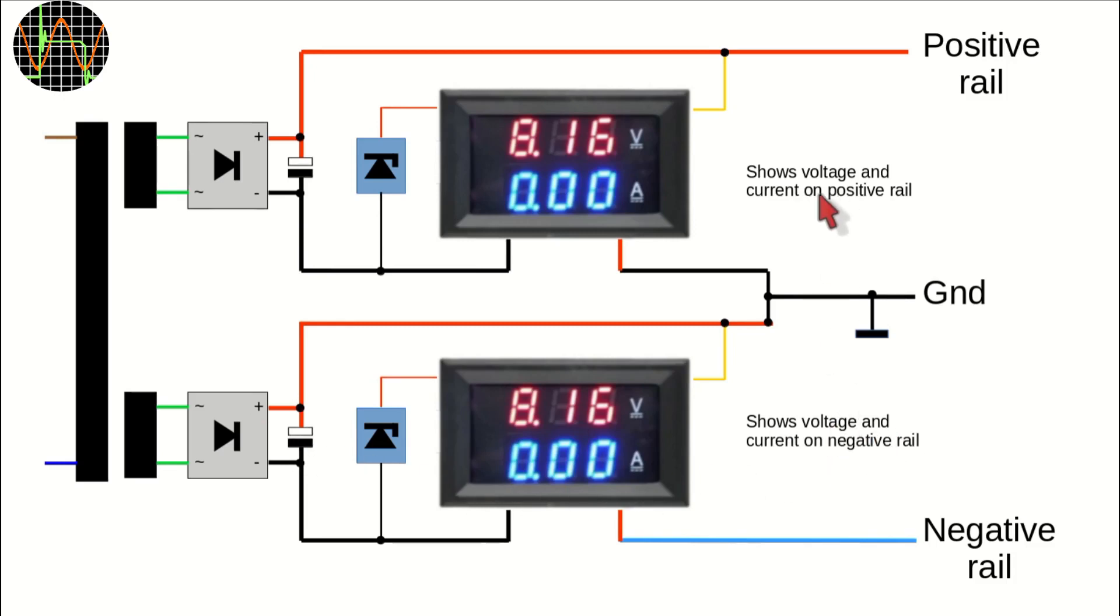Of course, on these meters voltage and current displays have no sign, so the fact that the lower meter in this case is showing negative voltage and current needs to be understood or indicated with a label next to the meter.